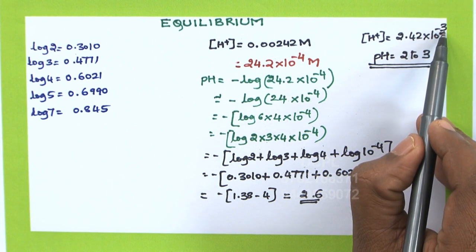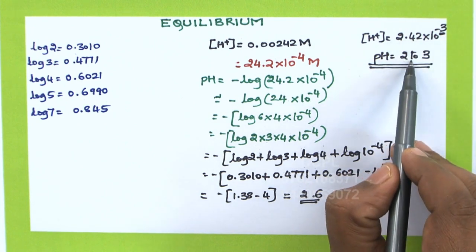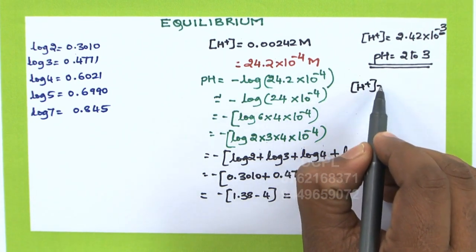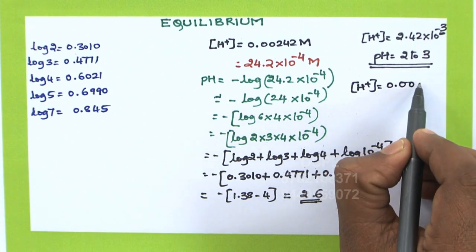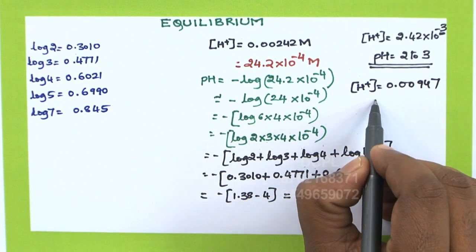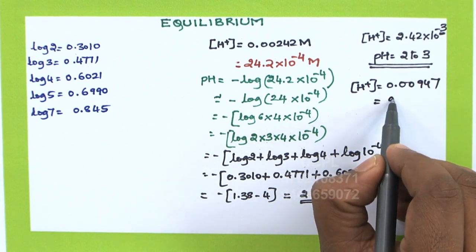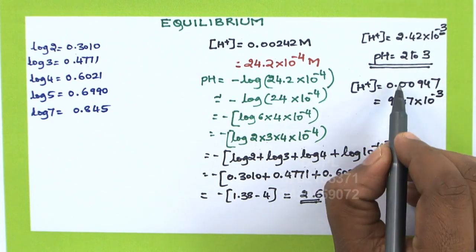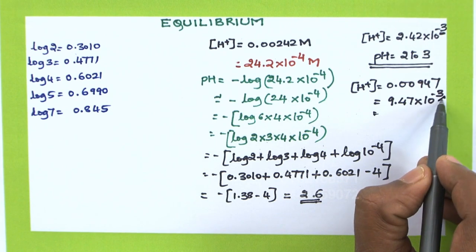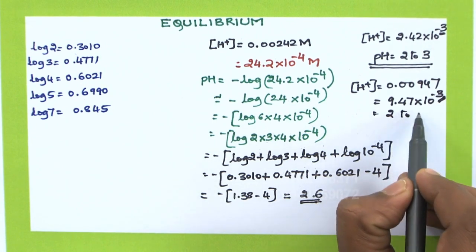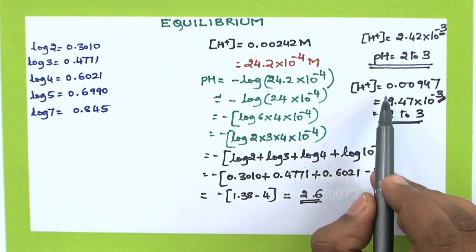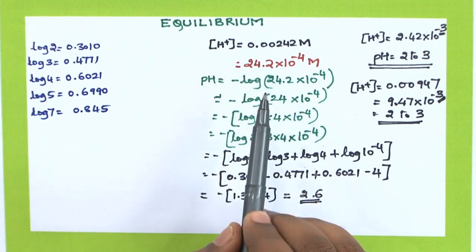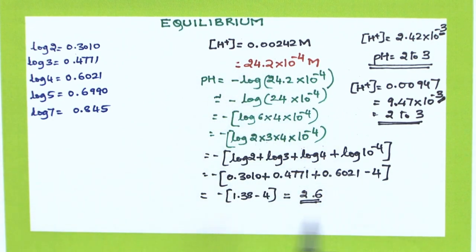If the power is 3, then the pH will be slightly less than 3 — that is, between 2 and 3. For example, if H+ = 0.00947, shift the decimal after one digit to get 9.47 × 10⁻³. The power is 3, so the pH will be between 2 and 3. To use this prediction method, make sure the decimal is after one digit. If you want to calculate the exact value, shift the decimal after two digits so that you can take multiples of the number.